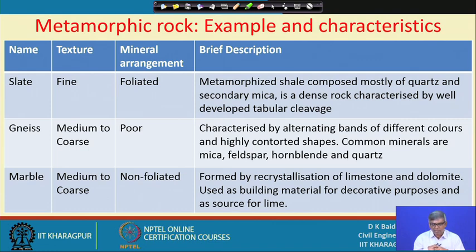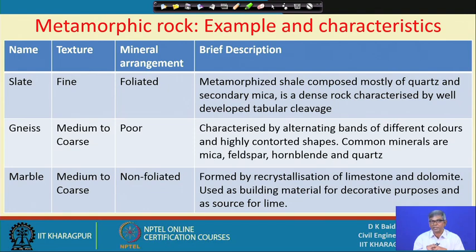Common minerals present in gneiss are mica, feldspar, hornblende, and quartz. Marble — its texture is medium to coarse, mineral arrangement is non-foliated, and it is formed by re-crystallization of limestone and dolomite. It is used as a building material for decorative purposes and as a source of lime. Marble is a very good building material — it can take a very good polish, and because of that we use it for flooring purposes and many other decorative purposes.